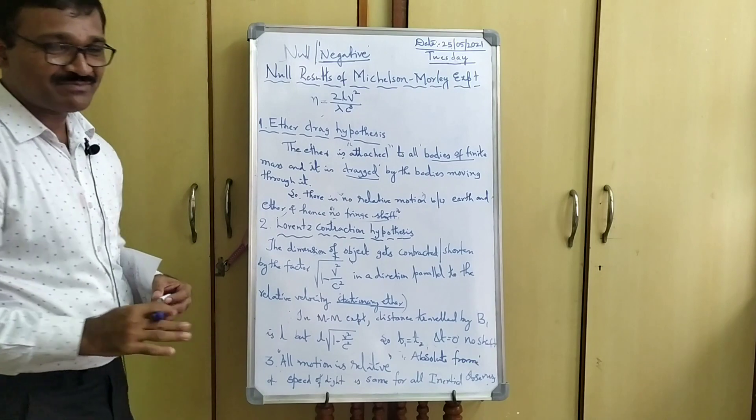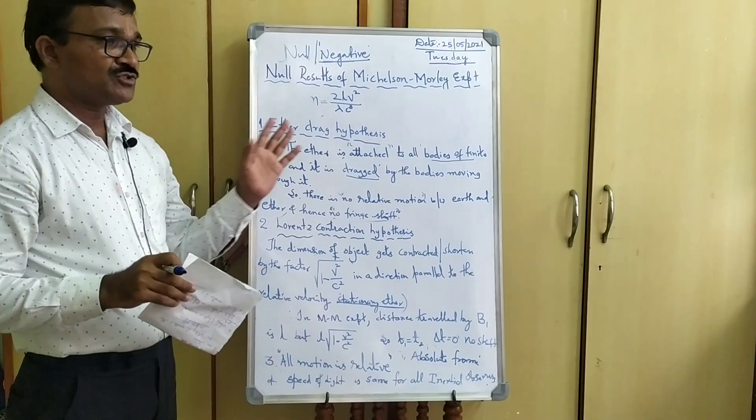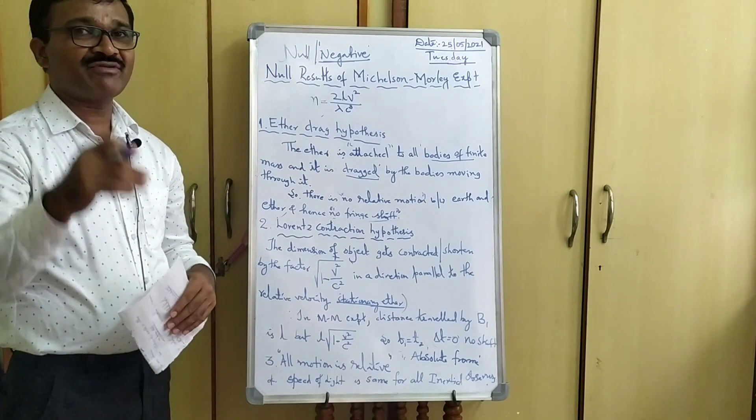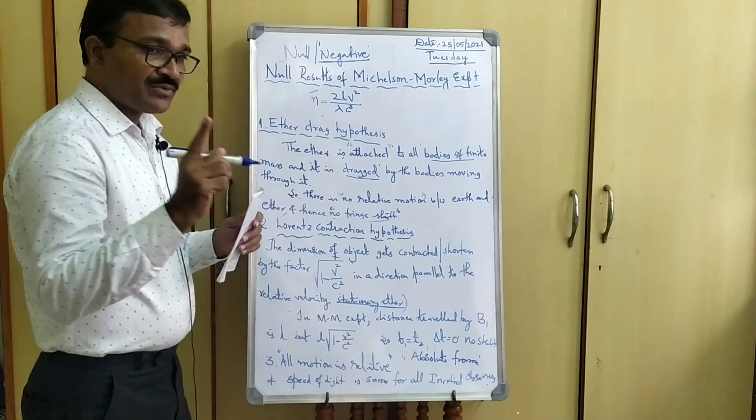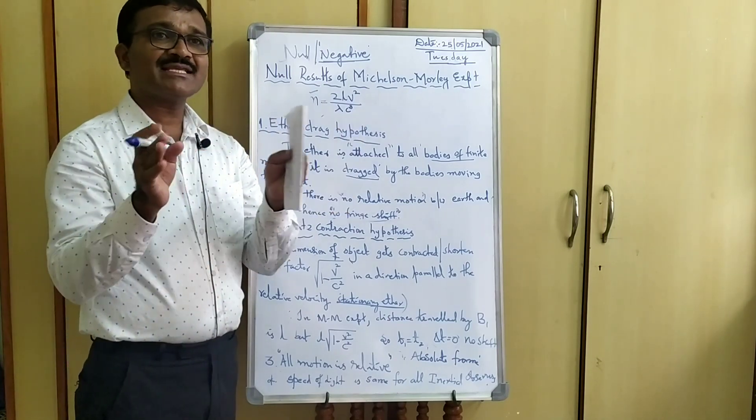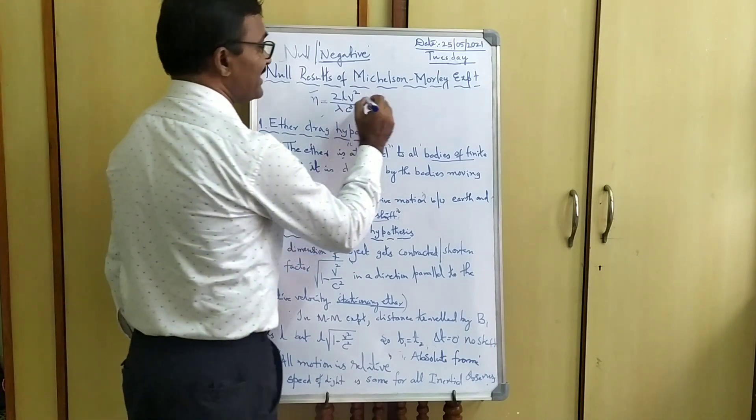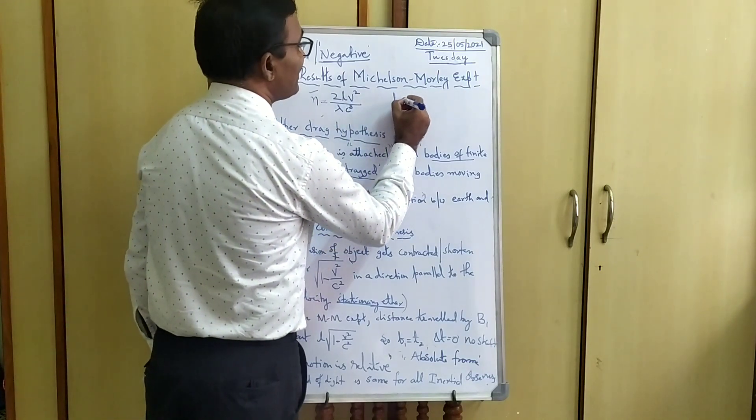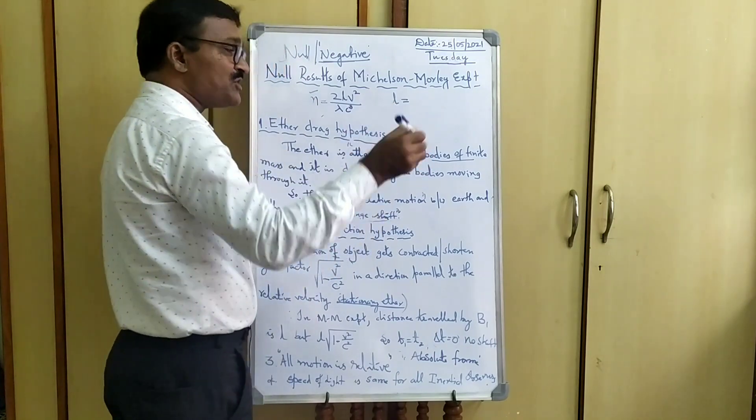This is the final expression we got in the Michelson Experiment during the simplification of theory. Where N is the number of fringes which are going to be displaced by the particular mark. Here, L is the optical path length of the light beams 1 and 2.